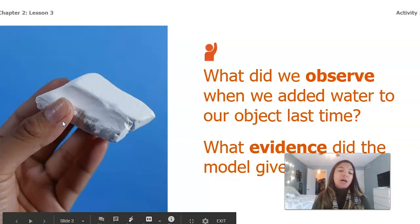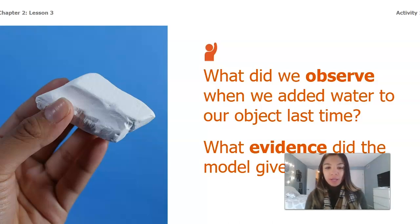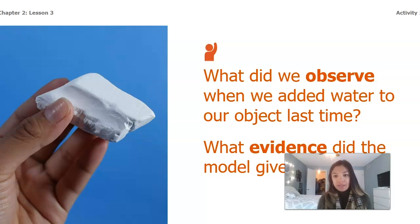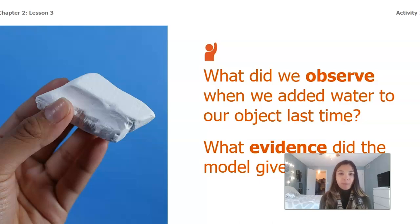Last lesson we watched a model basically about how water can affect a landform. In our model we used flour and a spray bottle that had water in it. So what did we observe when we added water? We noticed that initially the flour was really light and fluffy and powdery, and then once we sprayed the water onto it, it created more of a solid.